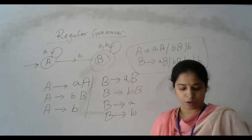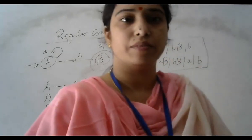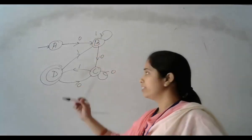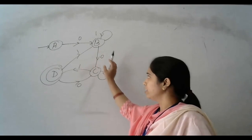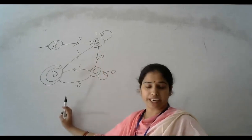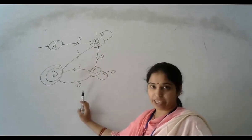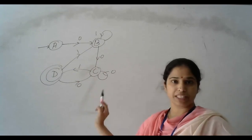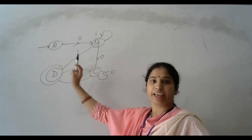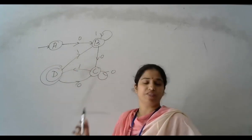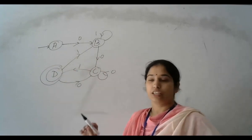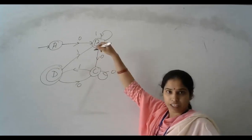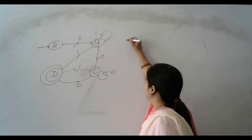Now take another example. In this finite state machine we have four non-terminals: A, B, C, D — where A is the start symbol and D is the final state. So let's start writing the regular grammar for this finite automata.